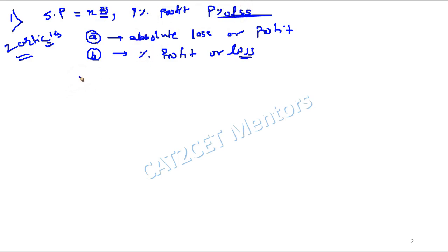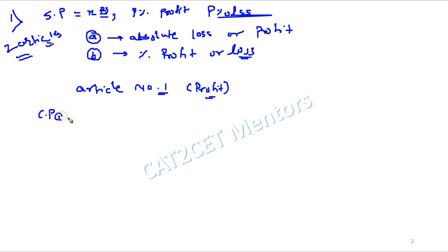We will first solve it traditionally and arrive at a formula or shortcut. For article number one, which is sold at a profit, we are given that the selling price is X rupees. So the cost price of article number one is 100 upon (100 plus p), multiplied by X, where p is the profit percent.